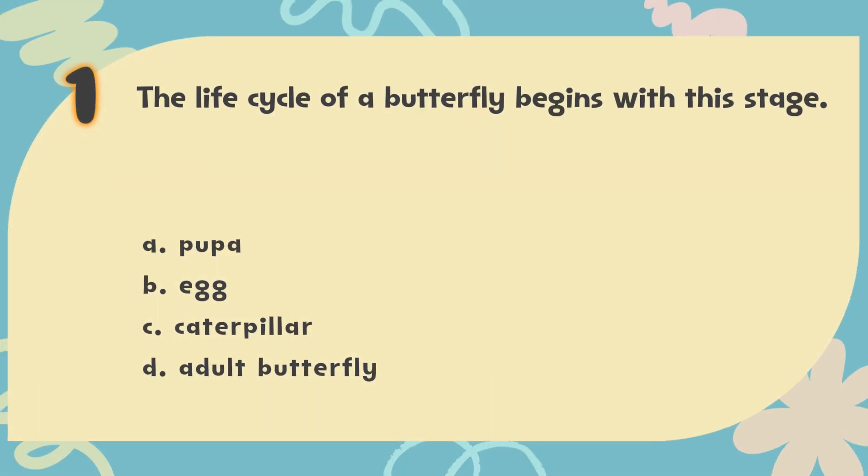The correct answer is B. Egg. A butterfly's life starts as a tiny egg, which is often laid on a leaf.